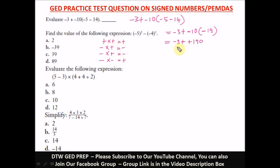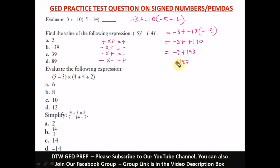A plus and a plus is a plus, so we have negative 3 plus 190. When you have negative 3 plus 190, the operation we perform is subtraction. We subtract 3 from 190 to get 187. To determine the sign, we look at the sign of the bigger number, which is 190 — positive. So our answer is positive 187.